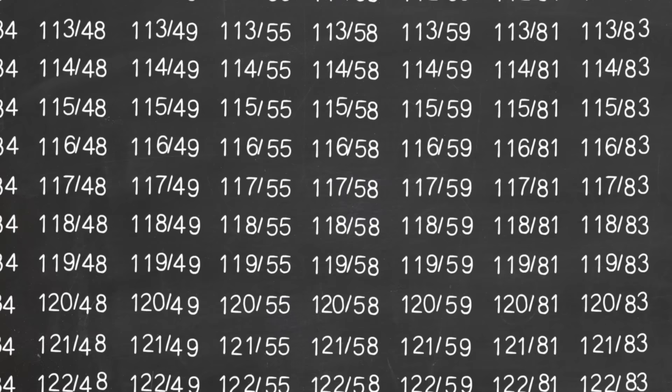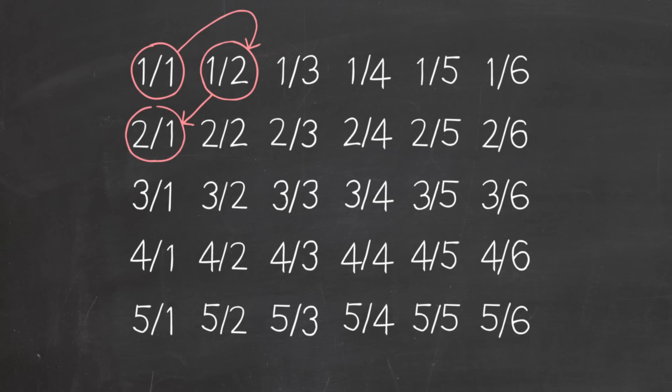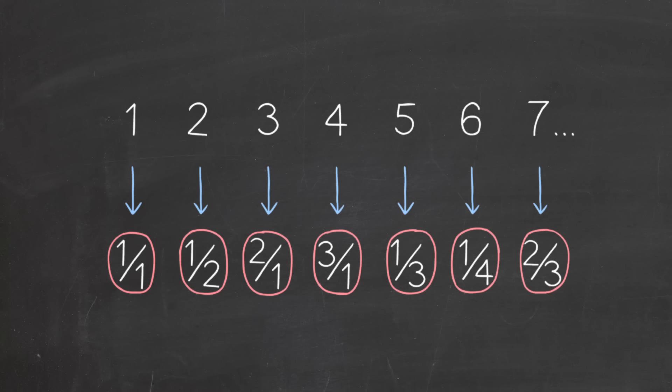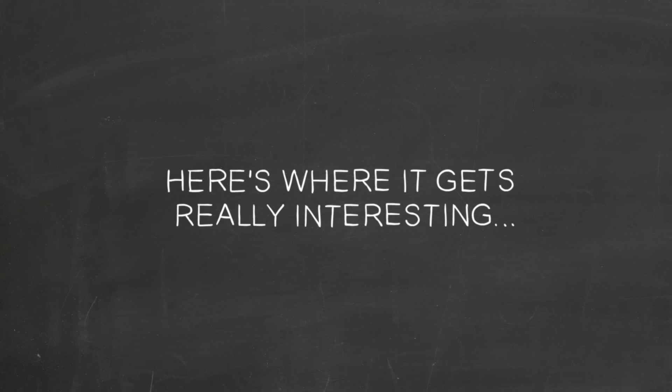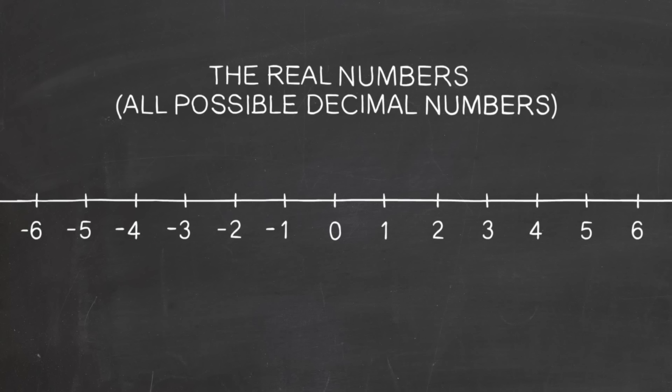For instance, you can find, say, 117 over 243 in the 117th row and 243rd column. Now, we make a list out of this by starting at the upper left and sweeping back and forth diagonally, skipping over any fraction, like 2 over 2, that represents the same number as one we've already picked. And so we get a list of all the fractions, which means we've created a one-to-one match between the whole numbers and the fractions, despite the fact that we thought maybe there ought to be more fractions.